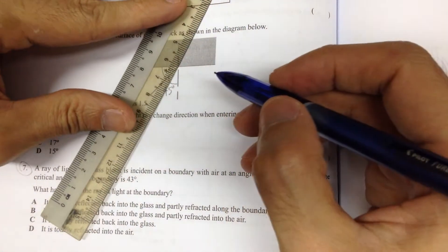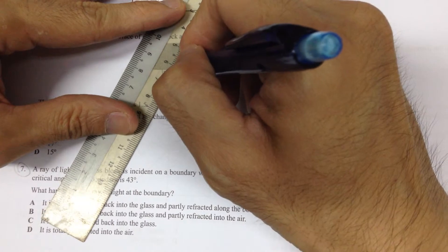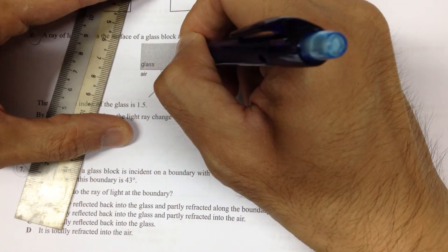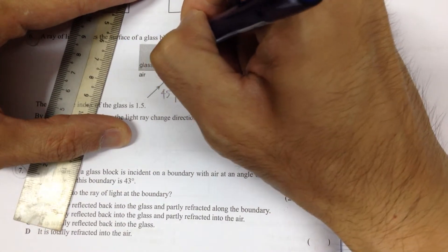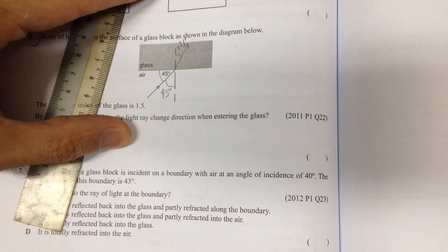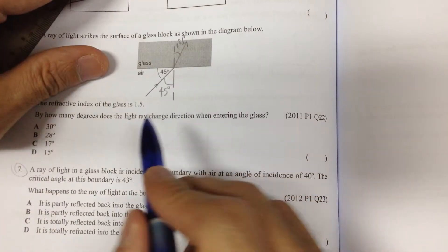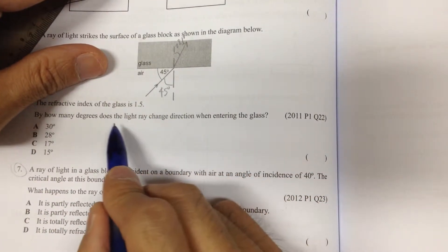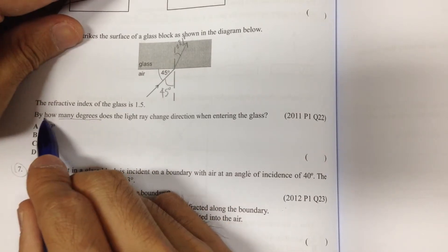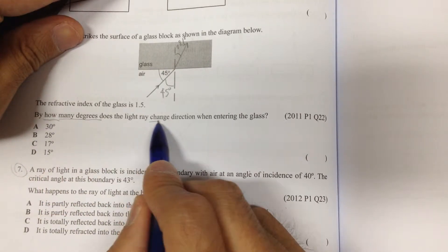So, what it meant is that the ray will actually bend towards the normal. Okay, and this angle will be 28.1 degrees. However, this is not the angle that they want you to find because if you read the question carefully, it says, how many degrees does the light ray change direction?